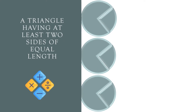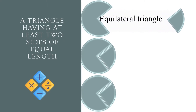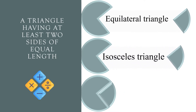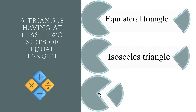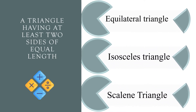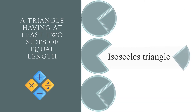A triangle having at least two sides of equal length. Equilateral triangle, isosceles triangle, or scalene triangle? The correct answer is isosceles triangle.